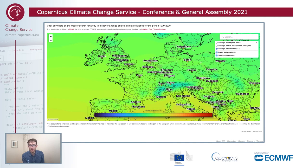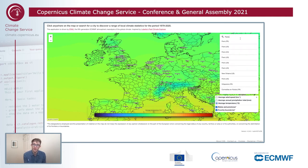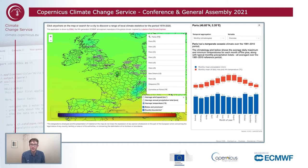In this example, we have ERA5 reanalysis retrieved from the CDS catalogue and averaged over 40 years. We've put this in an interactive map which you can use to click on or search for a city to discover a range of local climate statistics at the chosen location, displayed with some nice interactive visualizations.